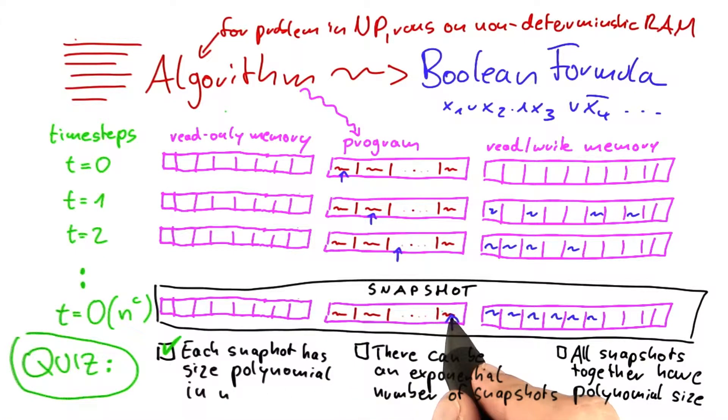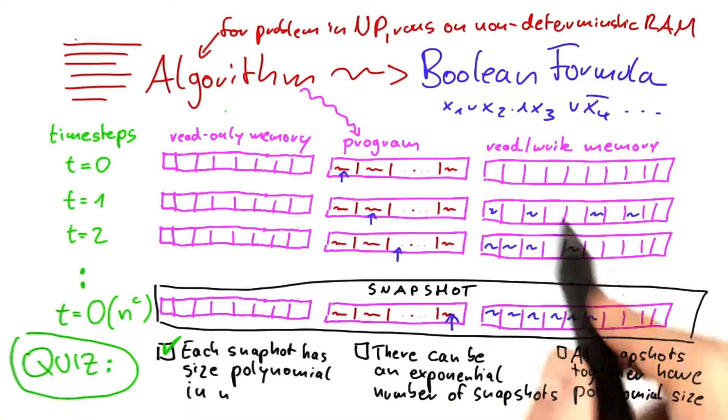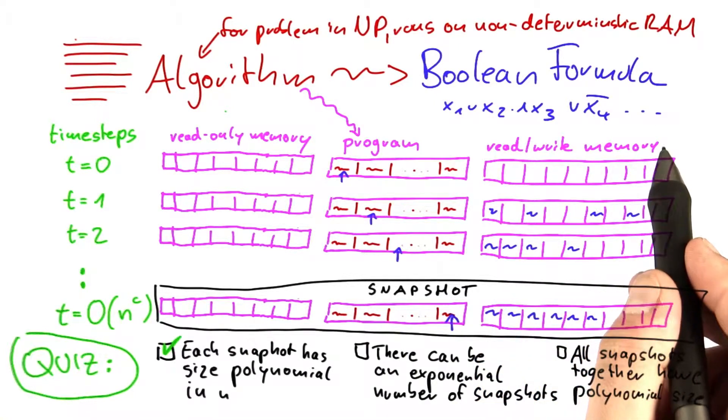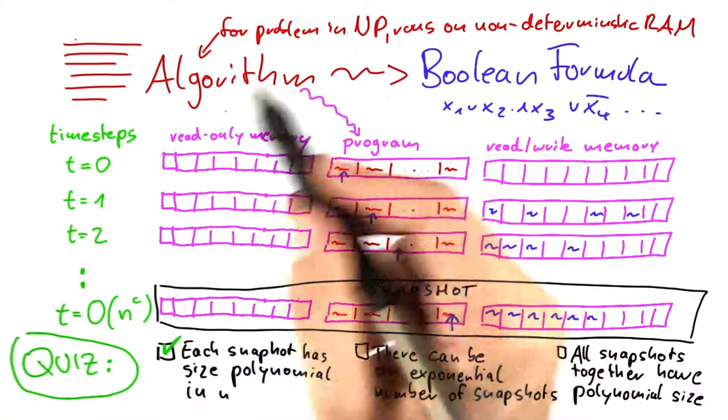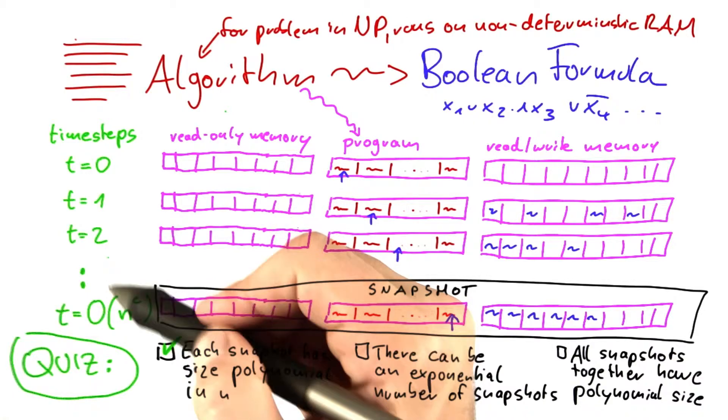Now, the size of the algorithm or program here, that is constant because the algorithm doesn't change with the input. So we can assume that this here has constant size, no matter what kind of input we are given. And then finally, this is an interesting one. How much memory does our algorithm need? Well, it's an algorithm for a problem in NP, which means it takes only a polynomial number of time steps.